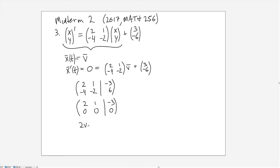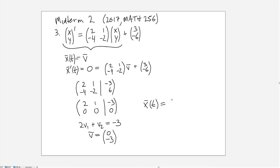The equation we need to solve is 2v1 + v2 = -3. There's a whole family of solutions, so I'll choose v1 = 0 to avoid fractions, which gives v2 = -3. So the particular solution is the vector [0, -3]. The general solution to the non-homogeneous equation is this particular solution plus the homogeneous solution x_h(t). Since the question only asks for a particular solution, [0, -3] is sufficient.